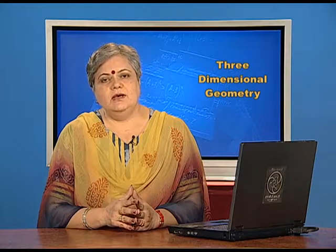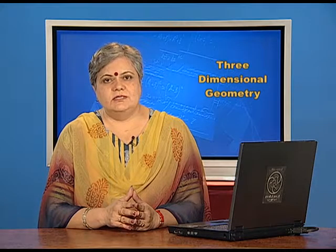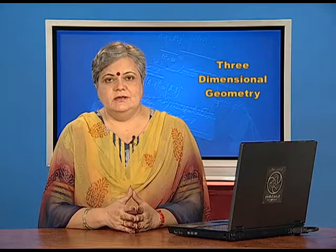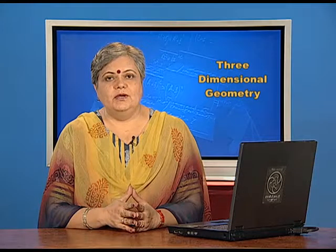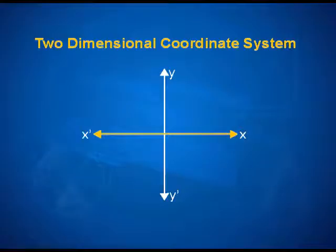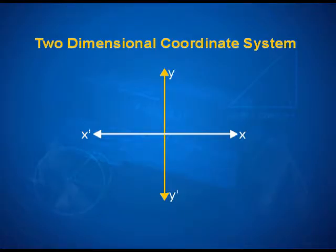To begin with, let us first look at the 2-Dimension Cartesian System, where we have two number lines mutually perpendicular to each other, intersecting at a point referred to as the origin. In the 2-Dimension Coordinate System, we have a horizontal line known as the x-axis and a vertical line known as the y-axis, perpendicular to each other, intersecting at the origin. Between these two lines, we constitute what is called the x-y plane.